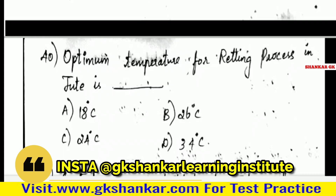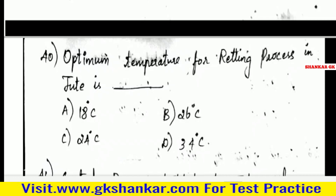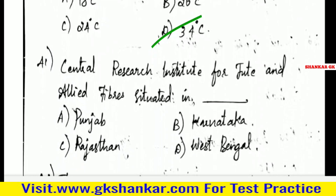Fortieth question: Optimum temperature for retting process in jute is — A. 18°C, B. 26°C, C. 24°C, D. 34°C. Answer: B. 34°C.